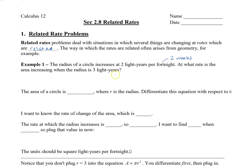To get an idea, I'm going to draw a circle, draw the radius, and draw an arrow pointing outwards, because that shows that the radius is increasing. I'll label it R. Recall that the area of a circle is pi times R squared, where R is the radius.